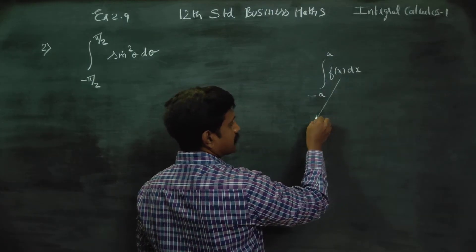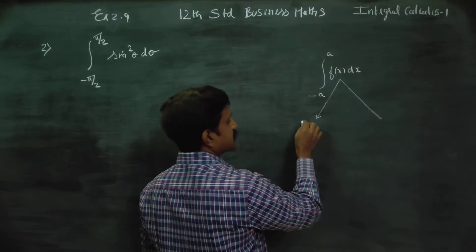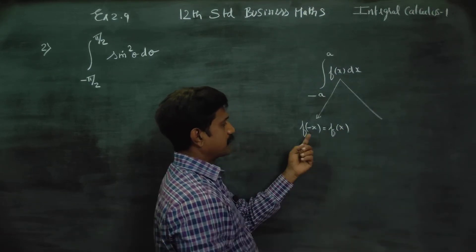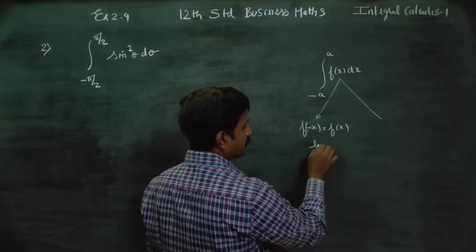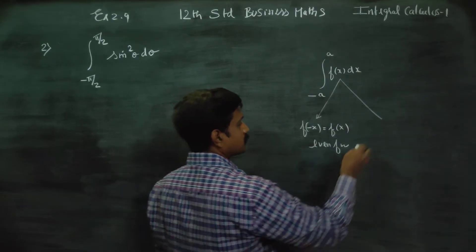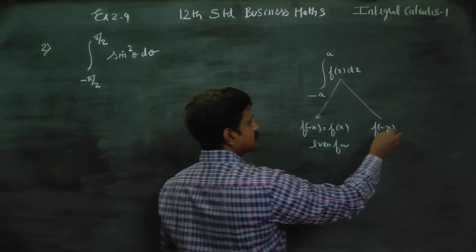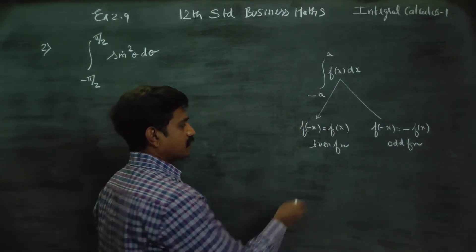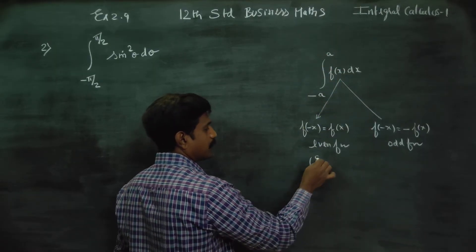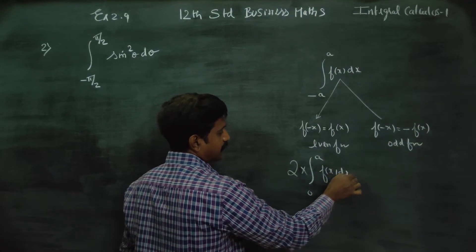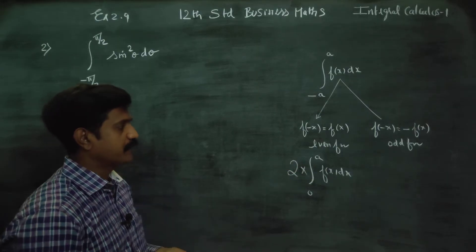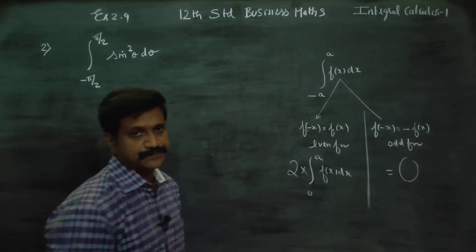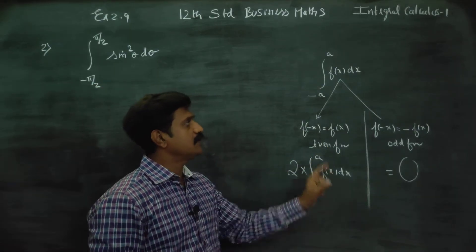We need to find whether f(x) is an odd function or an even function. Wherever x appears, substitute minus x. If the result comes out without a negative sign and gives back f(x), it is an even function. If substituting minus x gives a negative sign outside, then it is an odd function. If it is an even function, the integral from minus a to a becomes 2 times the integral from 0 to a. If it is an odd function, the answer is zero.